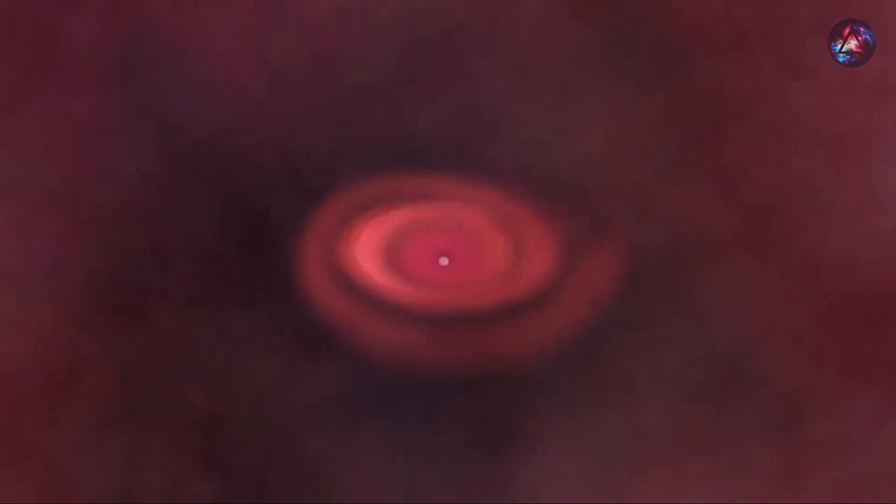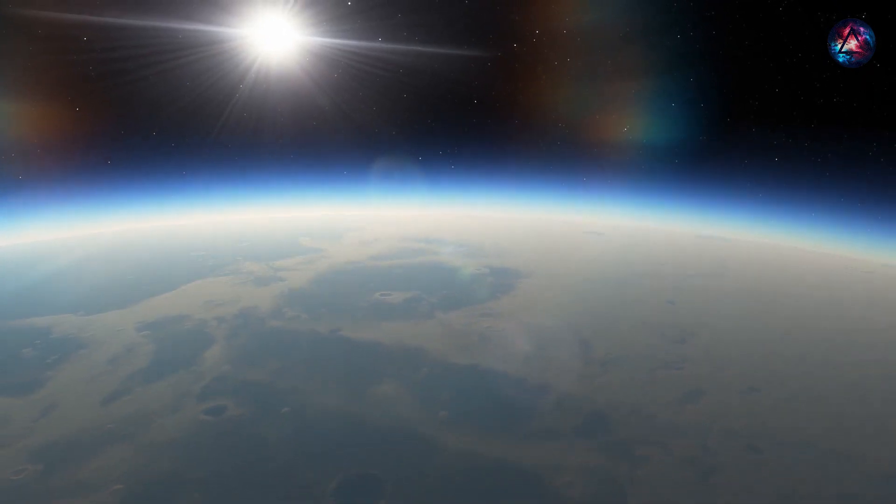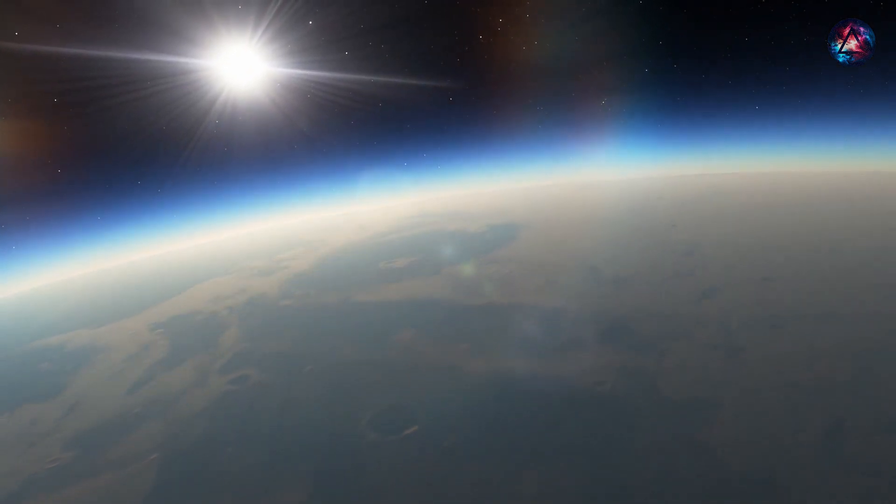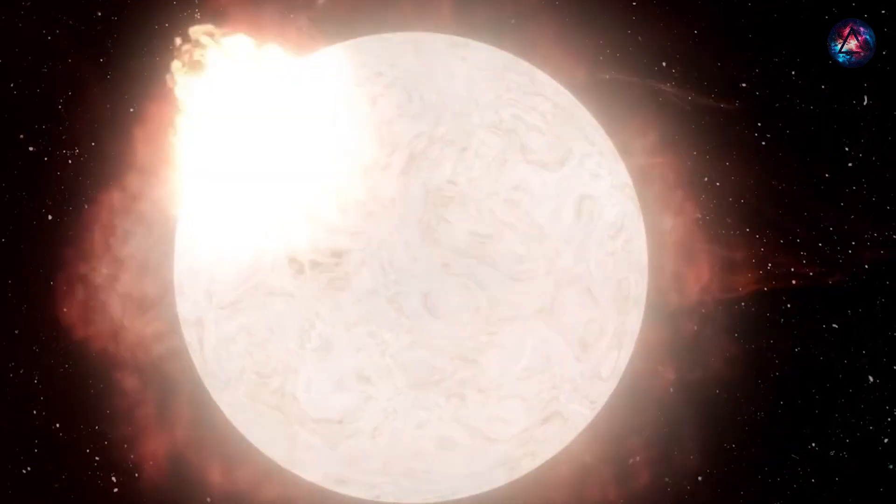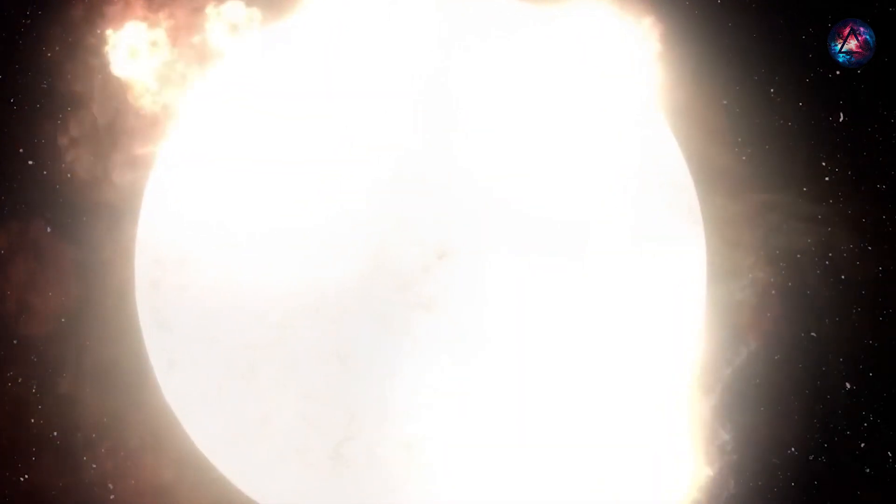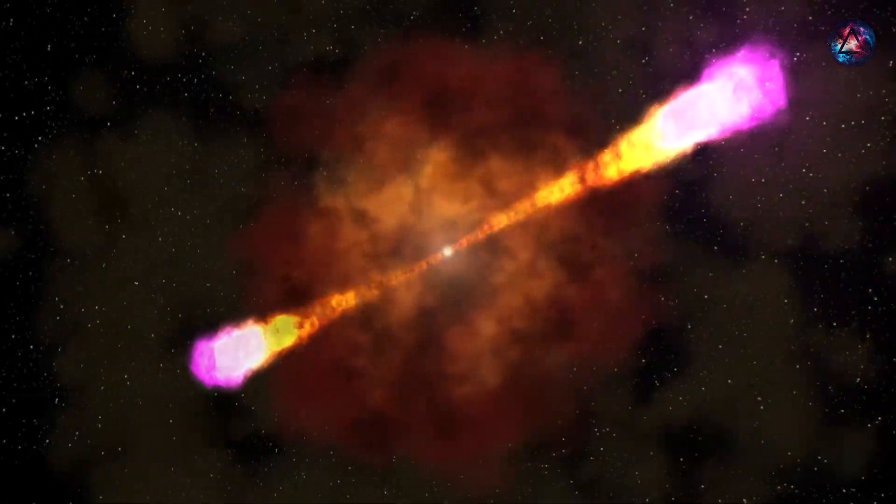Turns out, certain supernovae don't just stop at putting on a dazzling display. They can potentially interfere with a planet's ozone layer, exposing life to seriously harmful radiation from our very own sun. While these events may seem far away, the initial burst might blind us with visible light, and the real danger lurks in the shadows: cosmic rays.